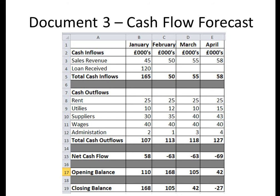We then look at Cash Outflows — the things the business spends money on. In this example we've got Rent, Utilities, Suppliers, Wages and Administration. Adding those together gives Total Cash Outflows. To get Net Cash Flow, we do Cash Inflows minus Cash Outflows — the balance of money received and paid out during one month. In January, $165,000 minus $107,000 gives us a Net Cash Flow of $58,000. The Opening Balance is any money left over from the previous month. The Closing Balance is calculated by Net Cash Flow plus Opening Balance — so $58,000 plus $110,000 gives us $168,000.